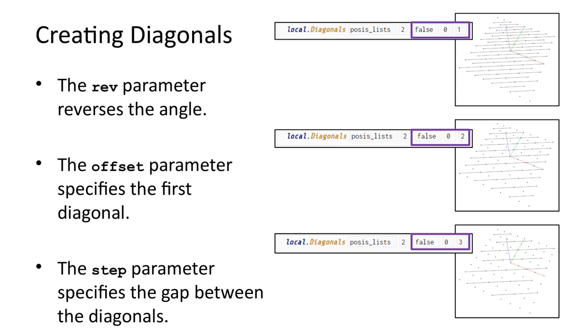The other two parameters are similar to the start and step parameters of the range function. They control which lists are selected for generating polylines. The offset parameter defines the start of the range. The step parameter defines the step size of the range.